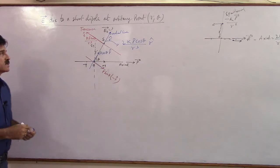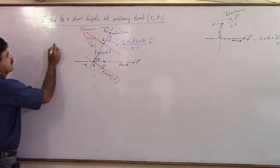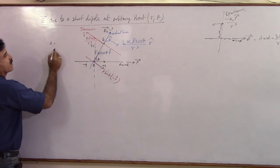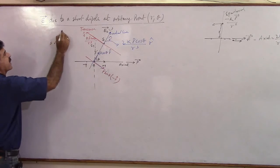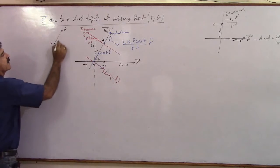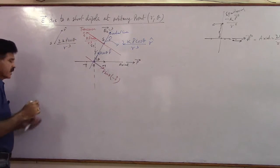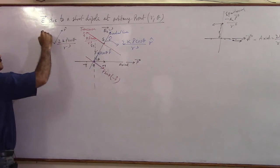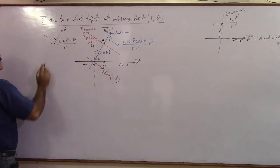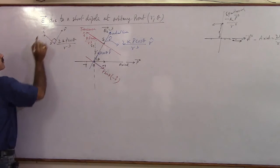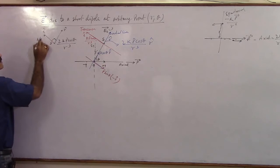So all in all, if you notice, you have two fields at this point. One field pointing like this in R cap direction, which is 2K P cos theta by R cube, and you have another field pointing in this direction which is 90 degrees to this in T cap direction. This is equal to K P sin theta divided by R cube.